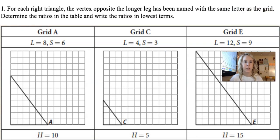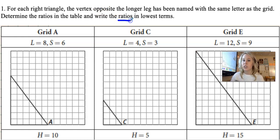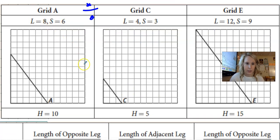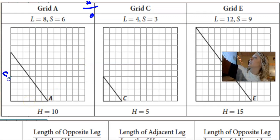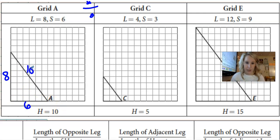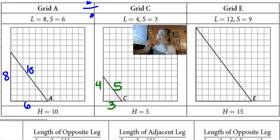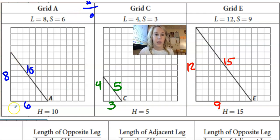For each right triangle, the vertex opposite the longer leg has been named with the same letter as the grid. We'll determine the ratios in the table and write them in lowest terms. Remember, a ratio is just a fraction — something over something. L stands for long side and S stands for short side. So the long side is 8, the short side is 6, and the hypotenuse is 10. For the second triangle: long side 4, short side 3, hypotenuse 5. For the third: long side 12, short side 9, hypotenuse 15. They got those numbers from counting the boxes.